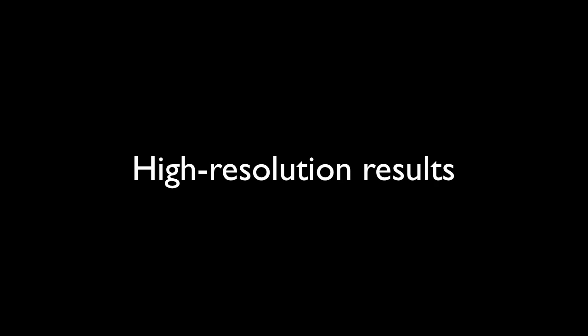Using our bench configuration, we captured a variety of high-resolution results. First, we compared to our CVPR 2009 paper by measuring the letter T from the word Treasurer on the $20 bill. Our previous system was barely able to resolve the letter T, while our new system captures both the structure of the raised printing as well as the fibers in the bill.